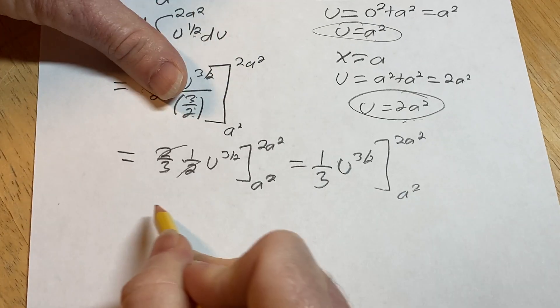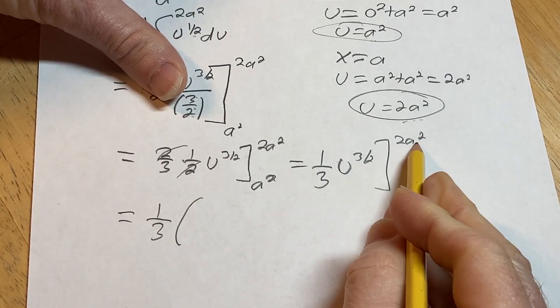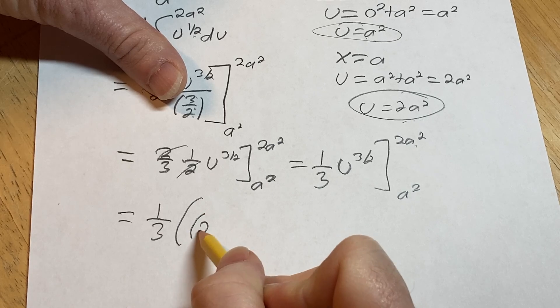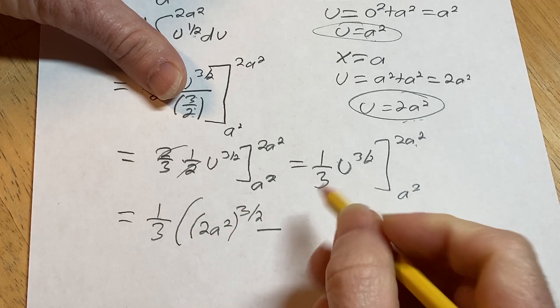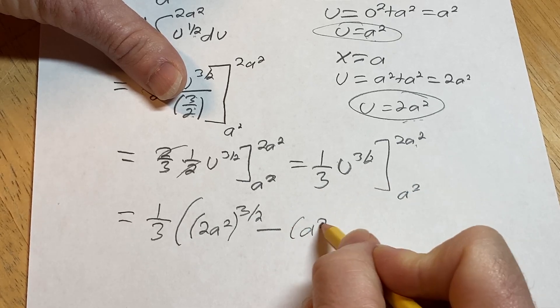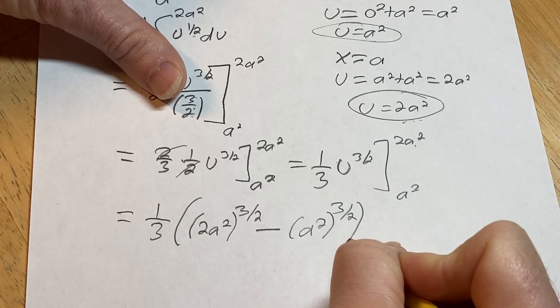Okay, so this is equal to 1 third. I'm going to leave that 1 third outside. Plug in 2a squared, so we get 2a squared to the 3 halves minus a squared to the 3 halves.